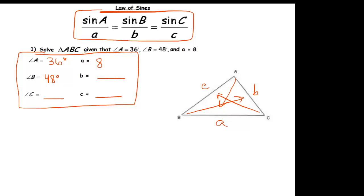Now angle C, we don't really need the law of sines to find that. Because we know that the three angles in a triangle add up to 180. So if we just do 180 minus 36 minus 48, we'll get angle C which is 96 degrees.